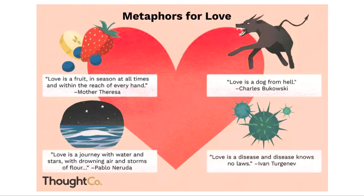There are lots of metaphors for love used all the time, and the thought company gives us a smattering of those. Mother Teresa said that love is a fruit in season at all times and within the reach of every hand. Notice she's changed the model just a bit, because fruit isn't in season at all times — blueberries come in summer, and peaches too. But this is a different kind of fruit, she's saying.